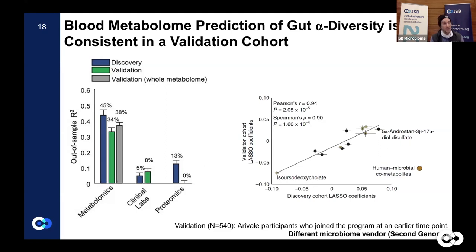When we fitted the models independently using cross-validation, the coefficients within the models for the 11 core metabolites were very consistent between the two vendor groups — for example, isolithocholate was a strong negative predictor in both the models trained on the validation cohort and the discovery cohort, further demonstrating the robustness of our findings.